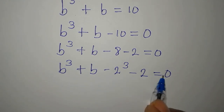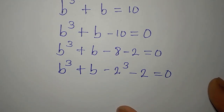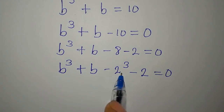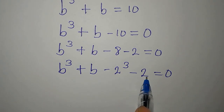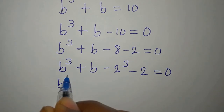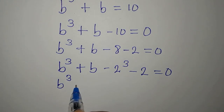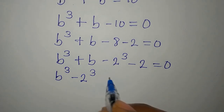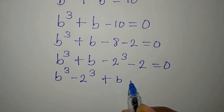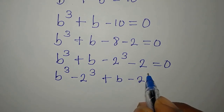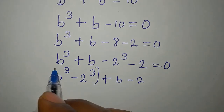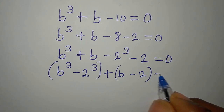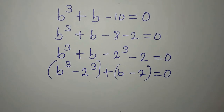Looking at this expression, we notice similar terms we can combine. We group B to the power of 3 minus 2 to the power of 3 together, then plus B minus 2 together, giving us two grouped pairs ready to factorize separately.